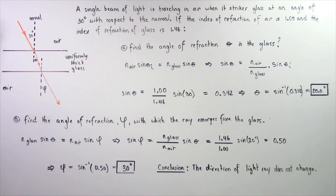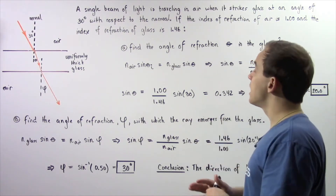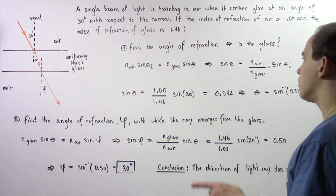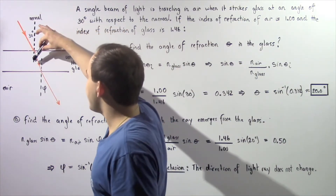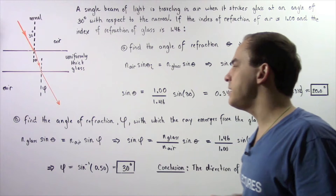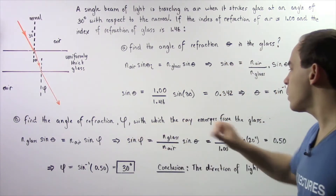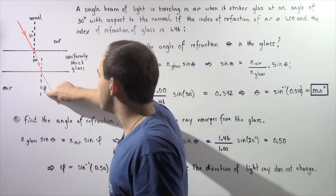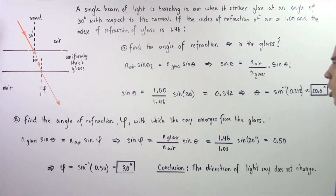Now, if the index of refraction of air is 1.00 and the index of refraction of glass is 1.46, in Part A, find the angle of refraction theta in the glass, where the angle theta is the following angle. And in Part B, find the angle of refraction phi with which the ray emerges from the glass, where the angle phi is the following angle. So let's begin with Part A.